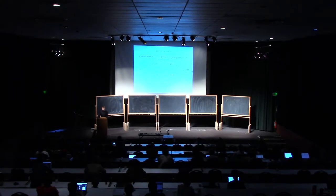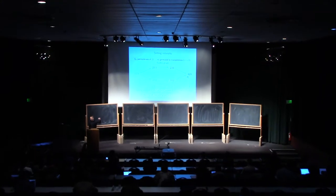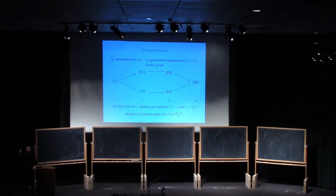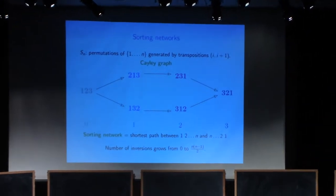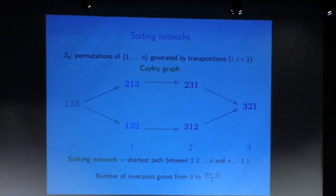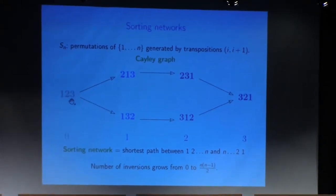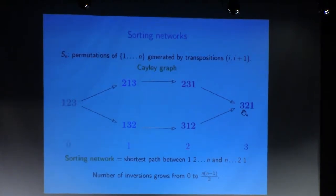There are special permutations in this Cayley graph: first, the identity permutation, like 1, 2, 3 in the example n equals 3. And then there is a reverse permutation where all the letters are reversed. You can say that you made the maximum number of transpositions, inverting the order of all letters. The sorting network, by definition, is the shortest path between the identity permutation and the reverse permutation in the Cayley graph of the symmetric group.